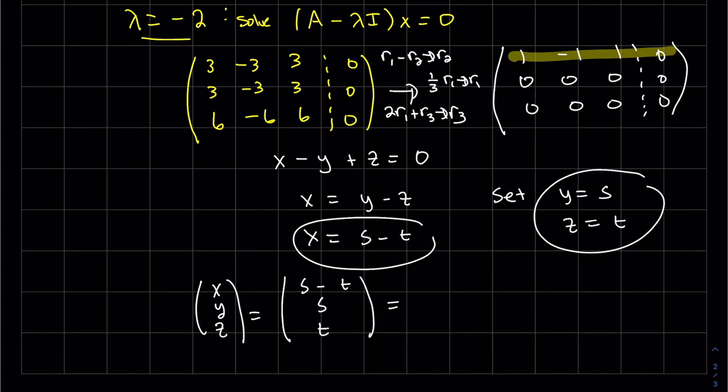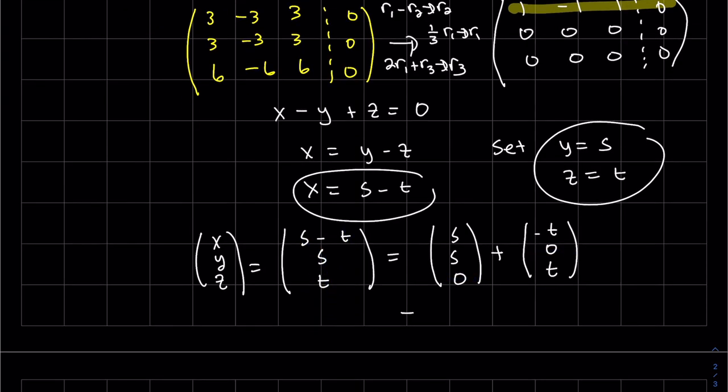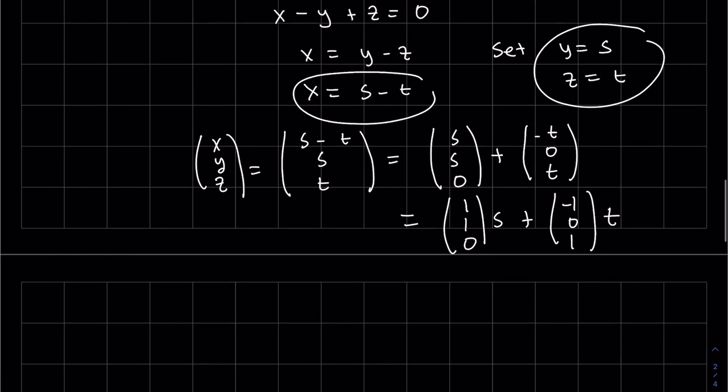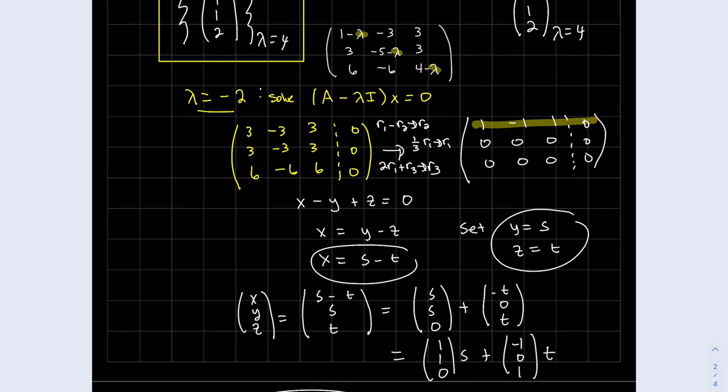And we're going to write it in column form. So we have no S there. We have no T there. So we do get two eigenvectors from this. They are independent. That's the end of the problem.